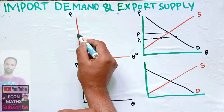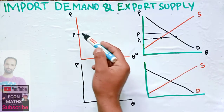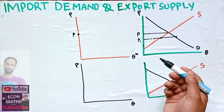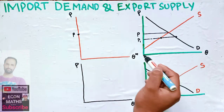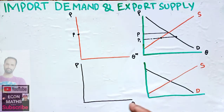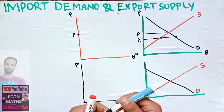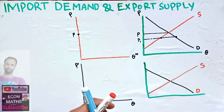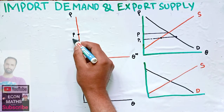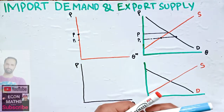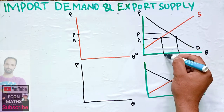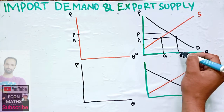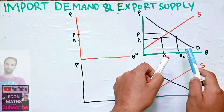When we translate price P to the import demand graph: at the autarky price P, we don't import anything because demand is domestically met by supply. When the price is P1, below the autarky price, we look at how much we are importing. The supply quantity is Q1 and the demand quantity is Q2, so the gap Q2 minus Q1 is the amount we are importing.